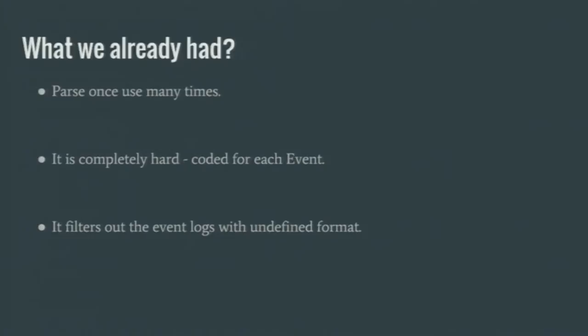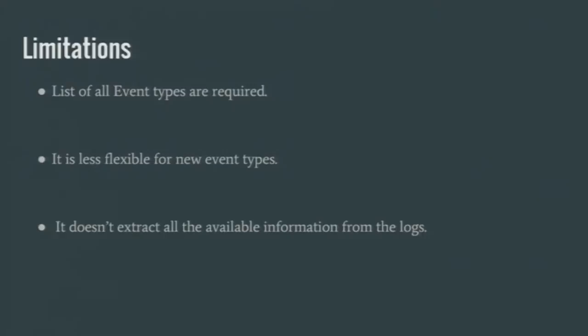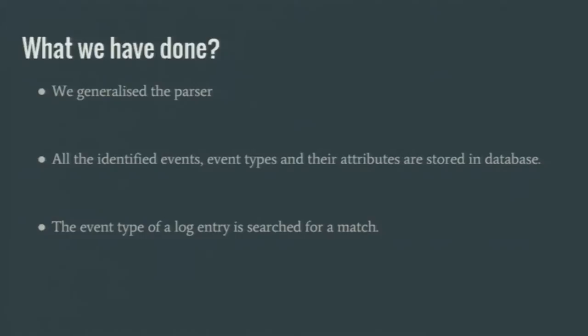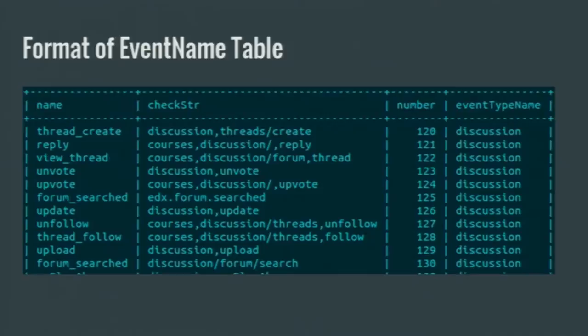The existing code is completely hard-coded for each event. What we have done is generalize the parser. Since it was hard-coded, we needed to know all event types in advance, and whenever a new event occurred it was difficult to add as the code had to be changed. We have generalized the parser so it is suitable for all kinds of events. We stored all event types and attributes in a database, and we search for the event type field in a JSON object against the database. For example, if the event type name is 'discussion', we check the JSON object and the corresponding event type and name are noted for further processing.